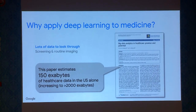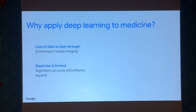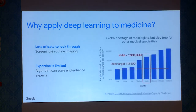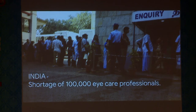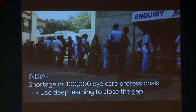It has been shown that 150 exabytes of data exists in the US right now, and it's going to increase even further. Another thing is that expertise is very limited — we just don't have enough professionals to go through this data. This shows the shortage of radiologists in many areas of the world, and India is not the exception. Ophthalmology also suffers from the same problem. This picture shows a line formed in front of one of our partner hospitals, where people are waiting to get their eye exams, and it's reported that around 100,000 eye care professionals are needed in India.